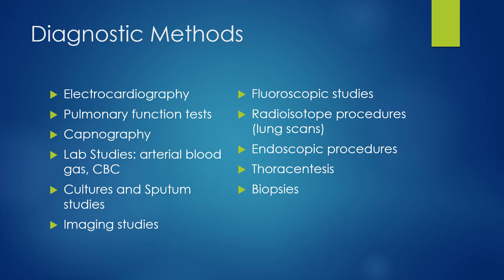There are many diagnostic tests used to assess the respiratory system. We can do an EKG or electrocardiogram to assess the heart, since the heart and lungs go hand in hand. We can do pulmonary function studies, or PFTs, which tell us how well the lungs are functioning — how much volume they can take in, how forcefully they can inhale and exhale, and how much resistance there is in lung stretching. We can do capnography to measure exhaled carbon dioxide levels, and lab studies like arterial and venous blood gases. We can also do a CBC to measure hemoglobin levels.